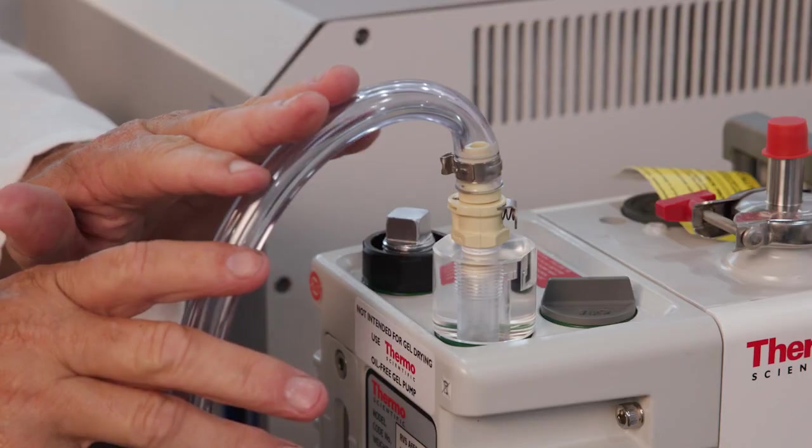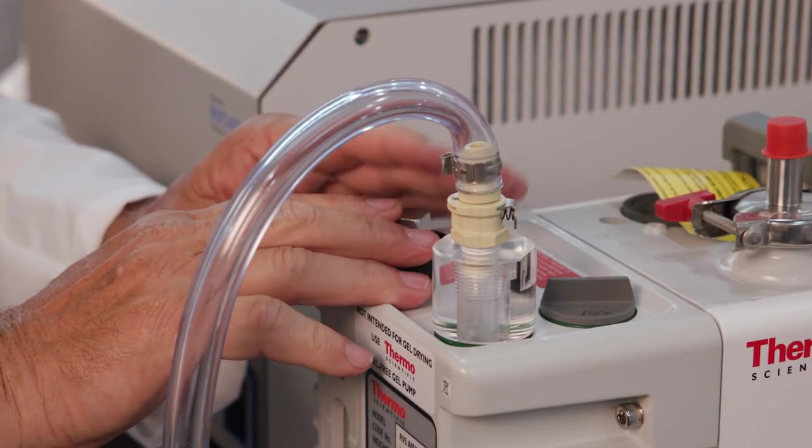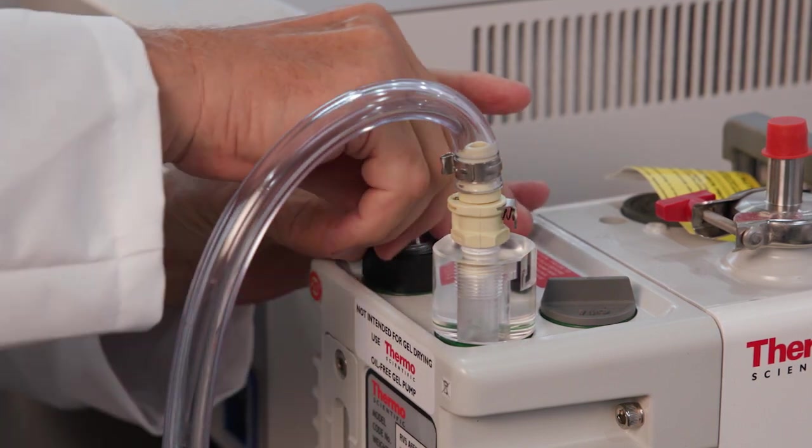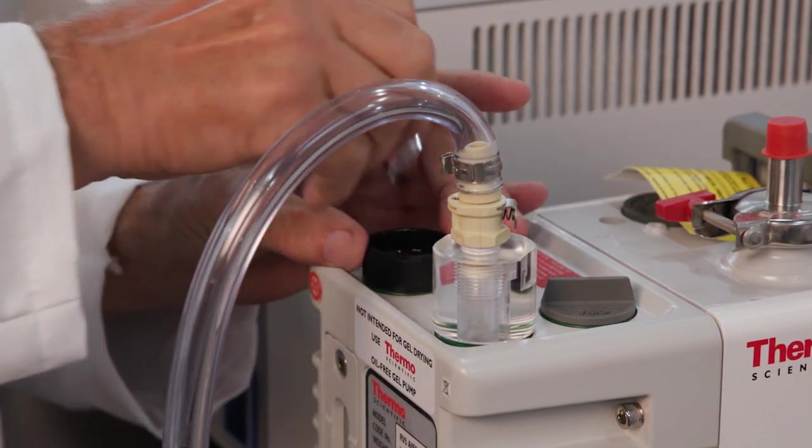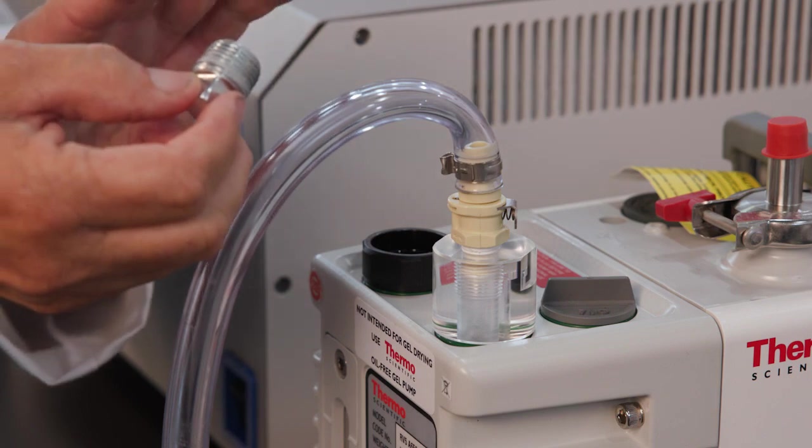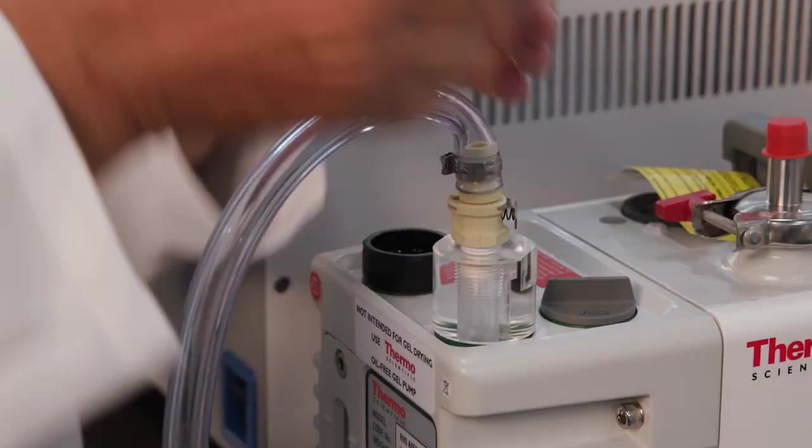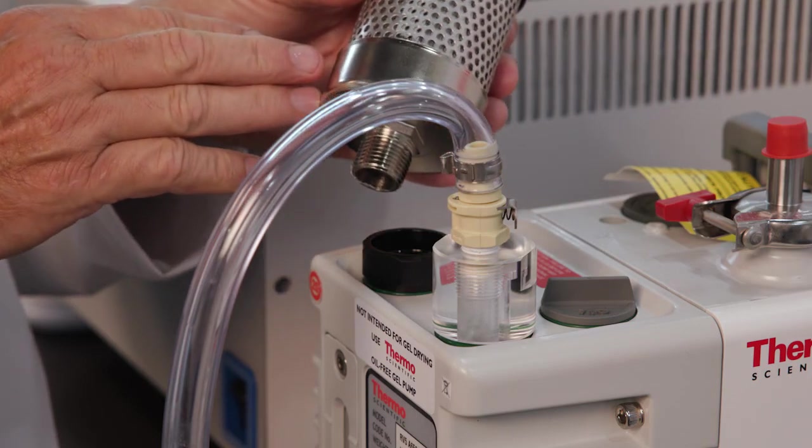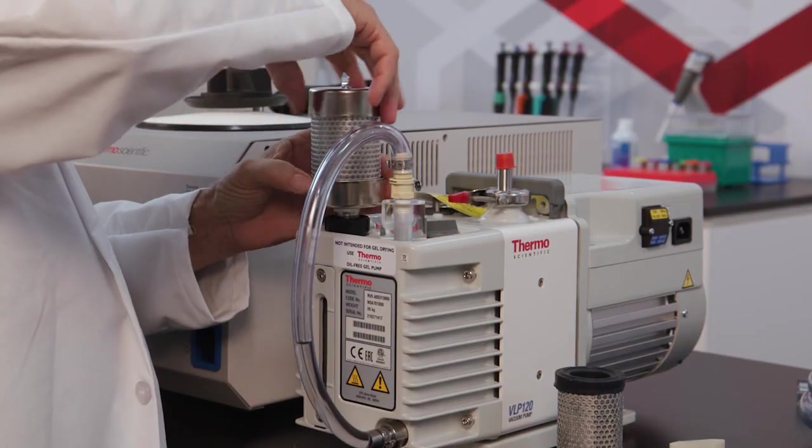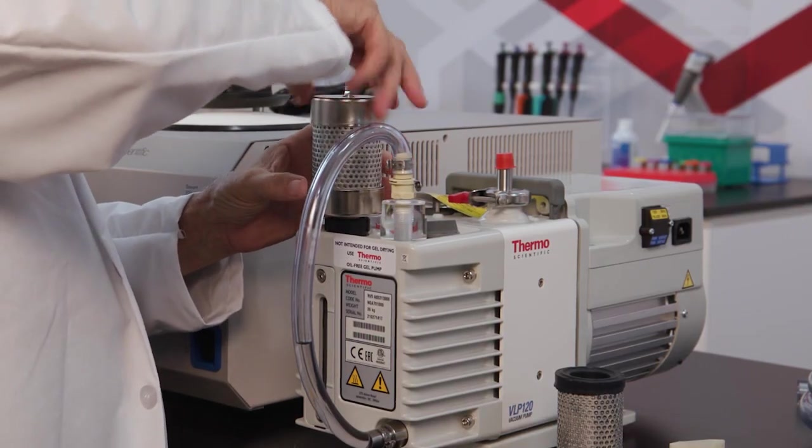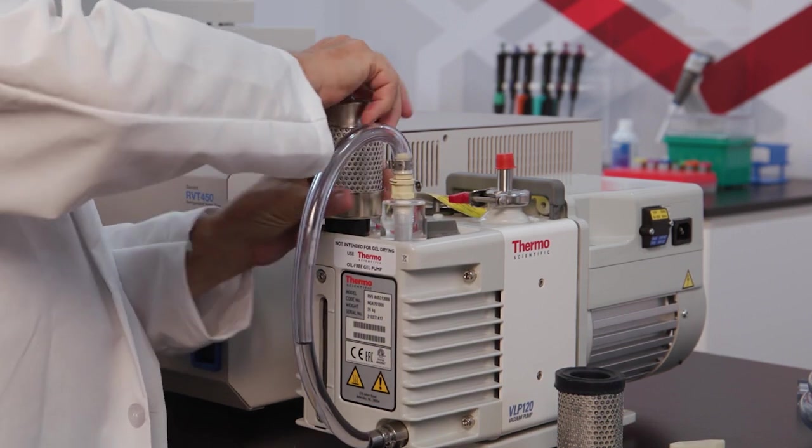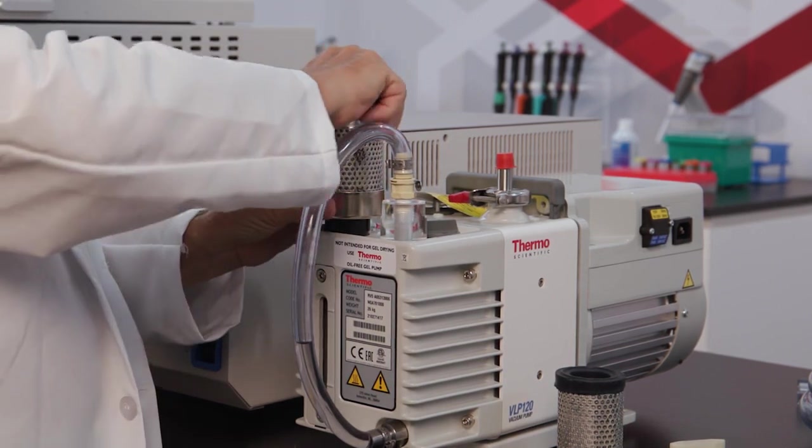The next portion is we want to remove the shipping plug out of the exhaust filter area. You're going to probably need a pair of pliers for this. Place that to the side. We want to take the mist filter. We're going to want to screw that into place. And again, this is going to be hand tight. You don't need to make it tighter than that.